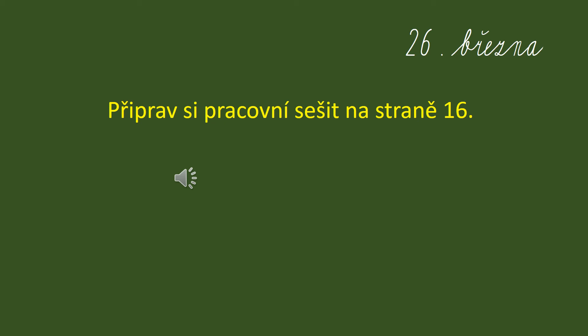V třetím úkolu nejprve doplň do jmen správnou slabiku – je, tě, nebo ně – a potom seřaď všechna jména podle ABCD. Nezapomeň, že jména se píší s velkým písmenkem na začátku.